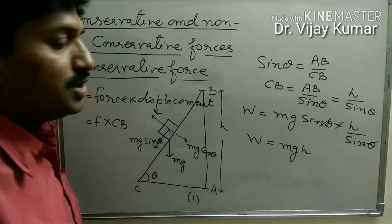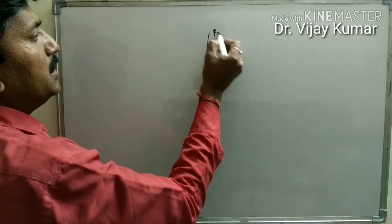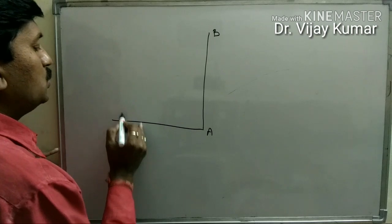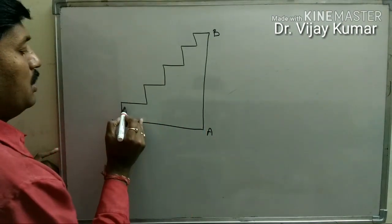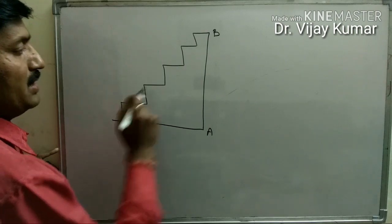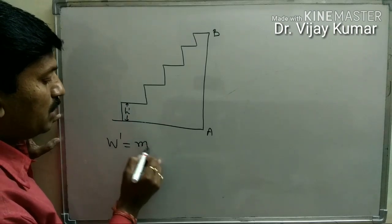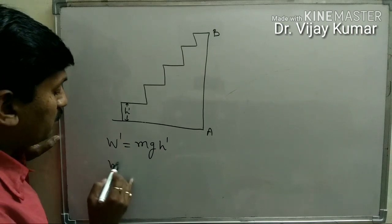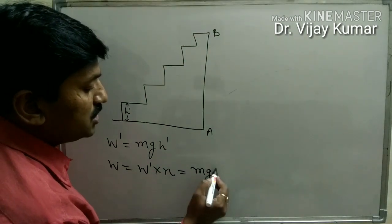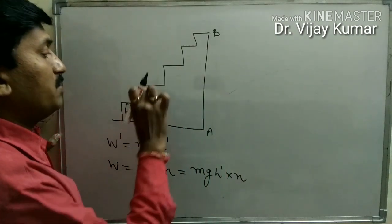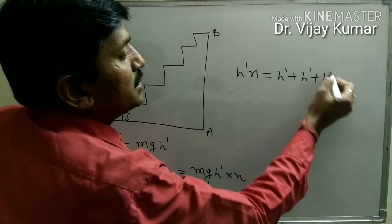Now we take the second situation. Suppose A and B are the initial and final positions and the body follows a stepped path. The height of one step is H dash and suppose there are N steps. Work done for one step is W dash equal to Mg into H dash. Total work done is W dash into N, which equals Mg H dash into N. Since H dash into N equals the total height H, total work done is again MgH.